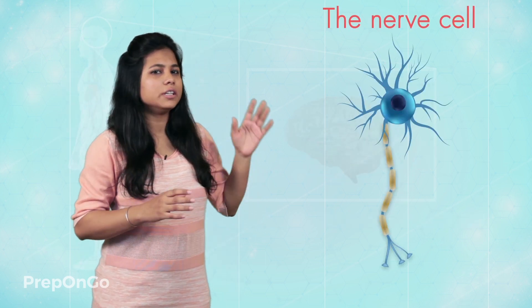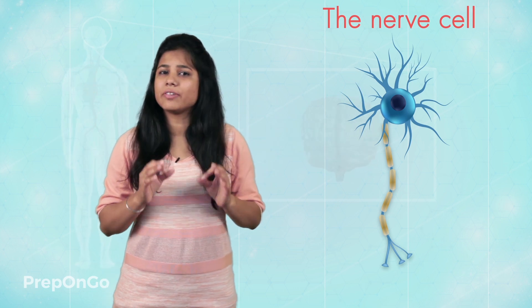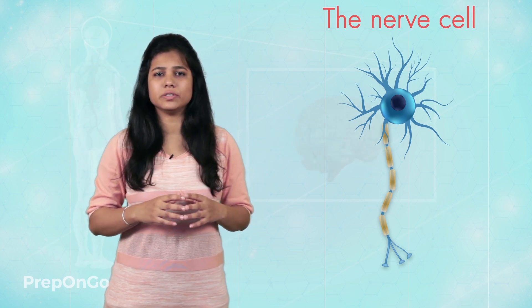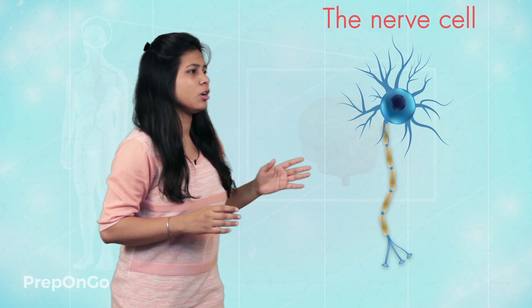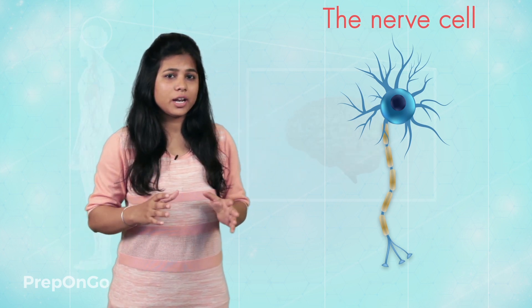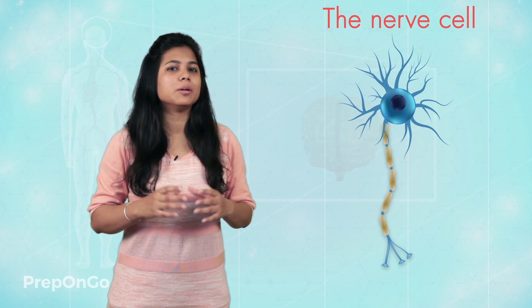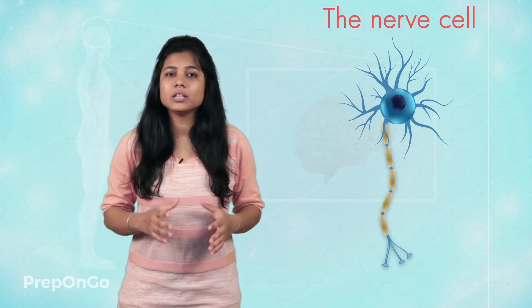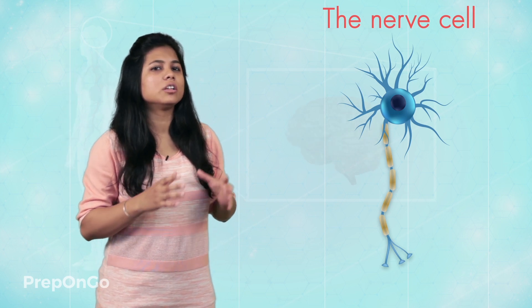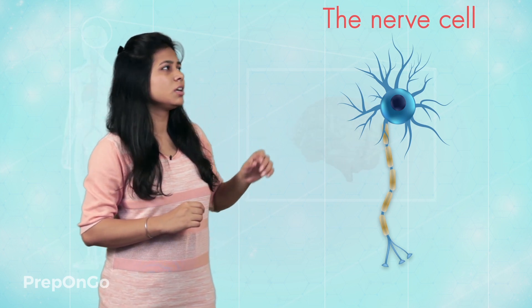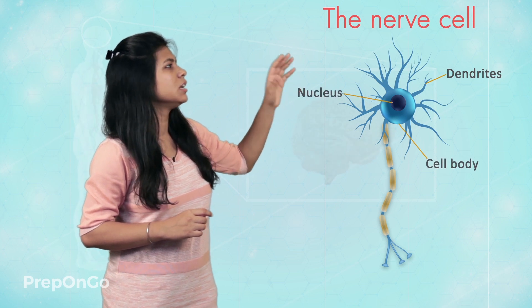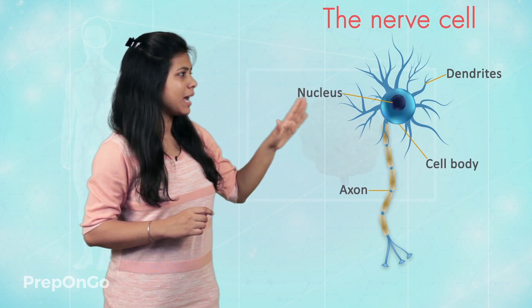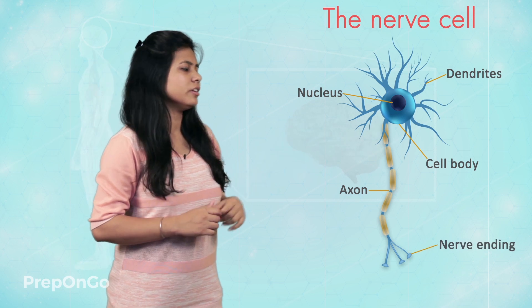Now, let's have a look at the nerve cell, which is the basic and functional unit of the nervous system. They are approximately one meter long and there are one billion in the brain. There are trillions of nerve cells in the human body. Let's have a look at the various parts of the nerve cell. It has dendrites, the cell body, the nucleus, the axon which has a myelin sheath covering, and the nerve ending.